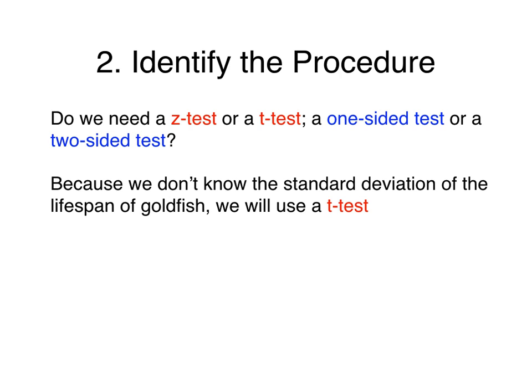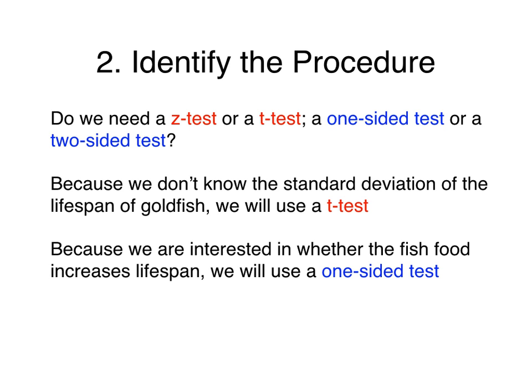Additionally, a one-sided test is used to test whether a treatment affects the population parameter in a specific direction, while a two-sided test is used to test whether a treatment affects the population parameter at all. In this case, because we are interested in whether the fish food increases lifespan, we will use a one-sided test. Thus, we have identified the procedure as a one-sided t-test.